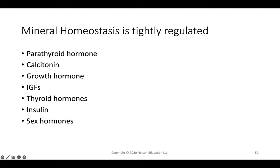Mineral homeostasis in bone ensures we have enough calcium, magnesium, etc. stored for later use — the bone acts as a mineral bank. Many hormones regulate this including parathyroid hormone, calcitonin, growth hormones, IGFs, sex hormones, insulin, and thyroid hormones. When blood calcium is too high, it's deposited into bone; when too low, it's pulled from bone back into the blood.